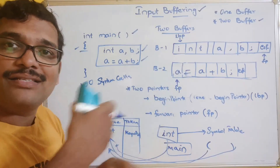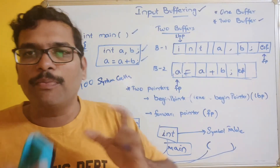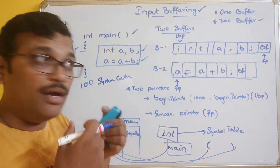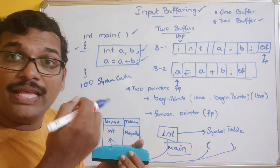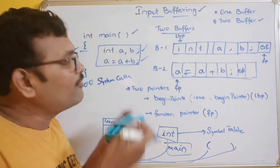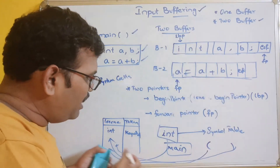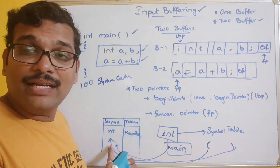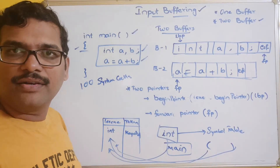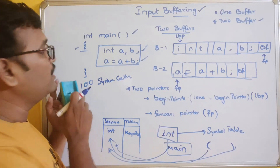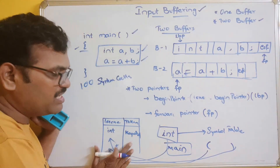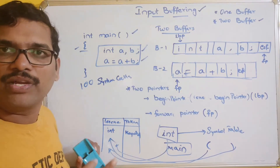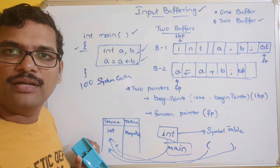Like this, characters are read from the program — each and every character is read into a buffer with a single system call. From this, the complete symbol table is developed, containing the different tokens of the program. The input is the program and the output is the symbol table, from which we get the list of all tokens.